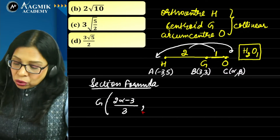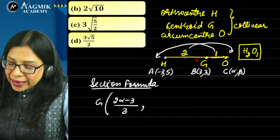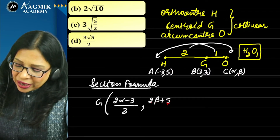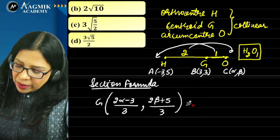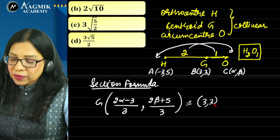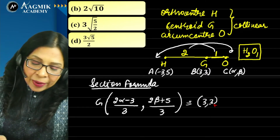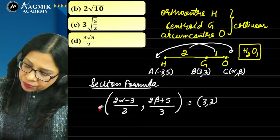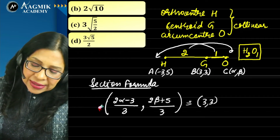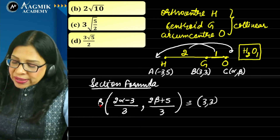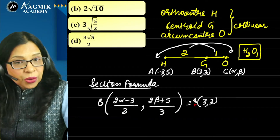Now A is the orthocenter = (−3, 5) and C is the circumcenter = (6, 2). The radius of the circle with AC as diameter = AC/2. Using distance formula: AC = √((6+3)² + (2−5)²) = √(81 + 9) = √90 = 3√10.